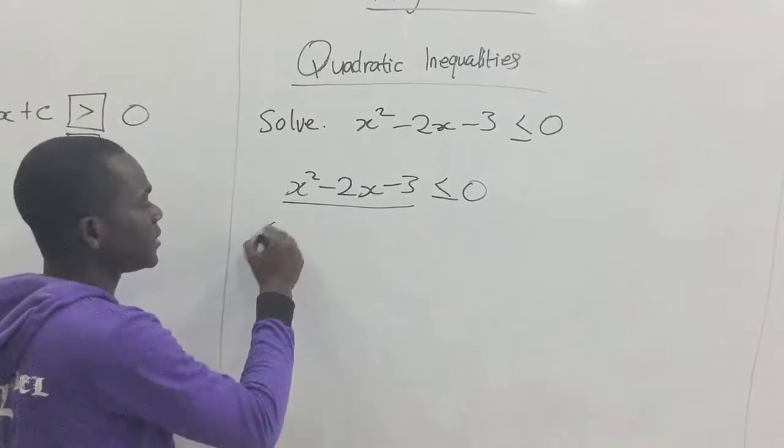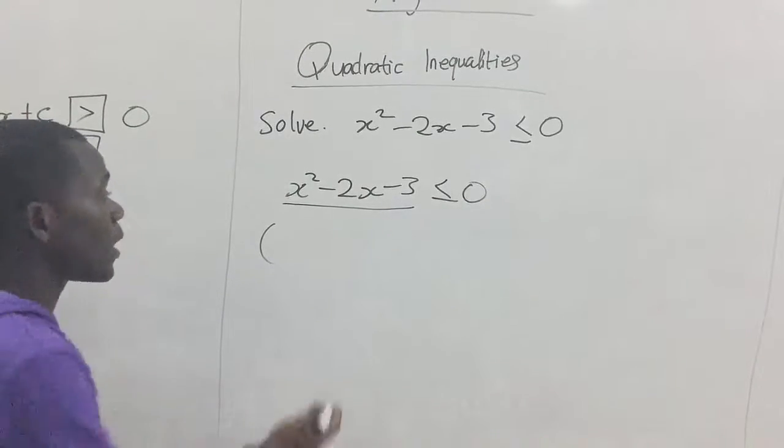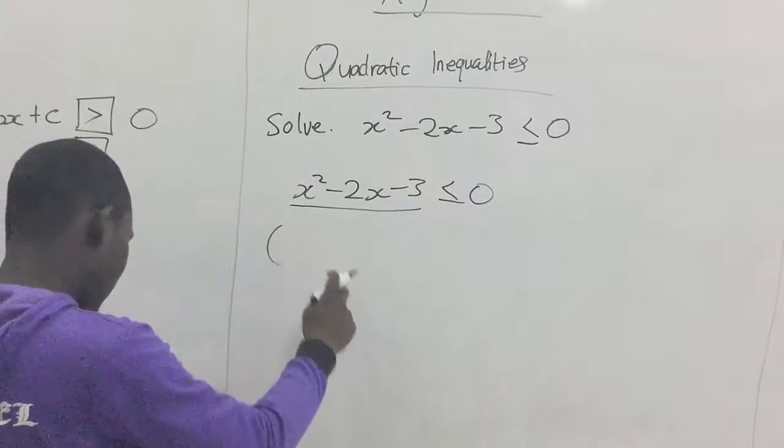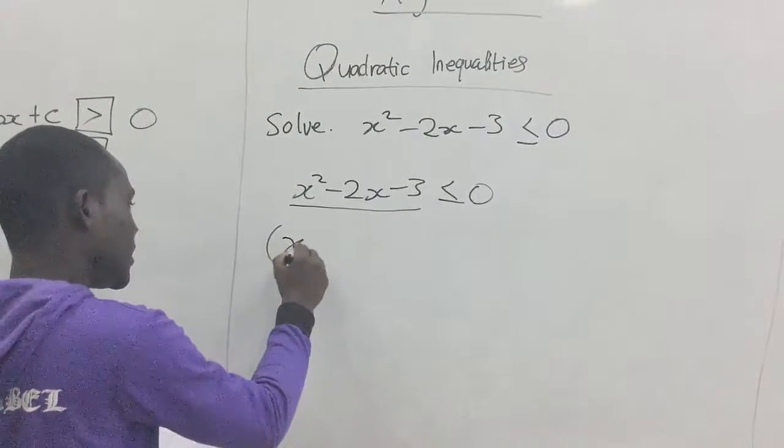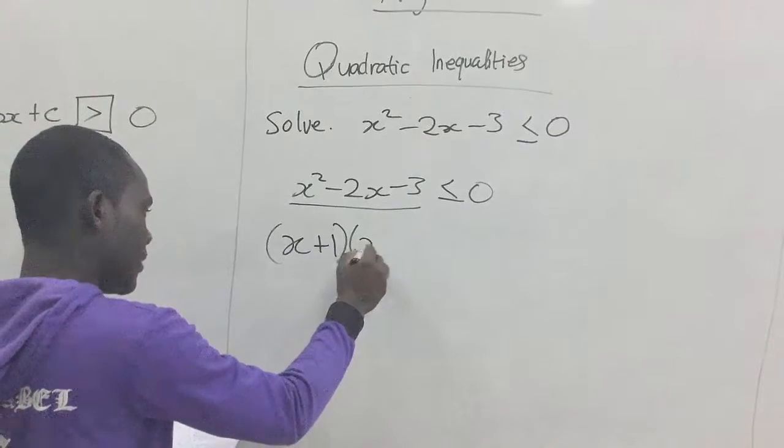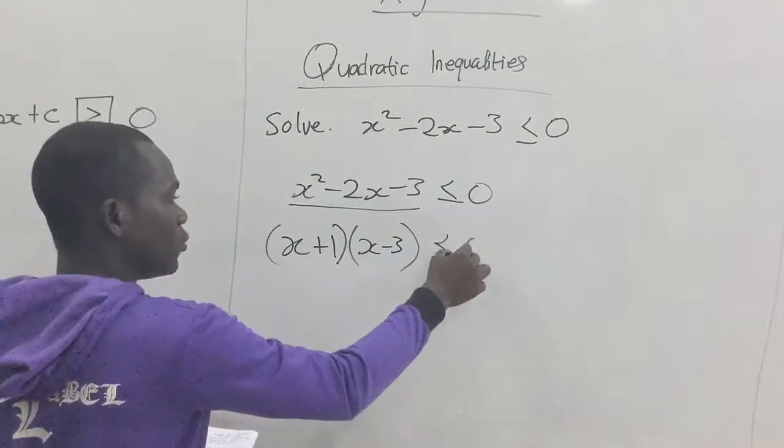We are going to take x squared minus 2x minus 3, which is less than or equal to zero. We first factorize the left-hand expression here. So, factorizing this gives us, you can use any method of factorization that you know, because we are only interested in getting the factors, but not the process in getting the factors.